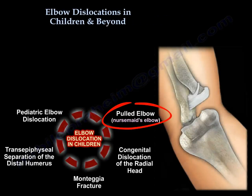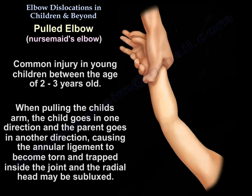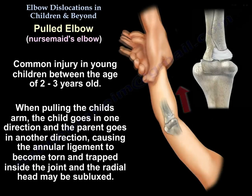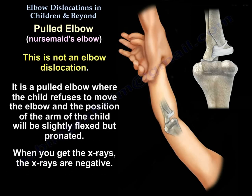Pulled elbow is common in young children between age two to three. When pulling the child's arm, the child goes in one direction and the parent in another, and the annular ligament becomes torn and trapped inside the joint, and the radial head may be subluxed. This is not an elbow dislocation. The child refuses to move the elbow, and the arm will be slightly flexed but pronated. X-rays are negative.